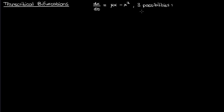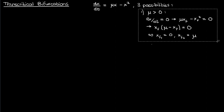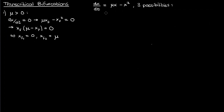What does the system look like if μ is positive? When we solve for the fixed points by setting dx/dt equals zero, we find two solutions: x equals zero and x equals μ. I've denoted the fixed points of this dynamical system by xf, and since there are two solutions, there are two fixed points when μ is positive.